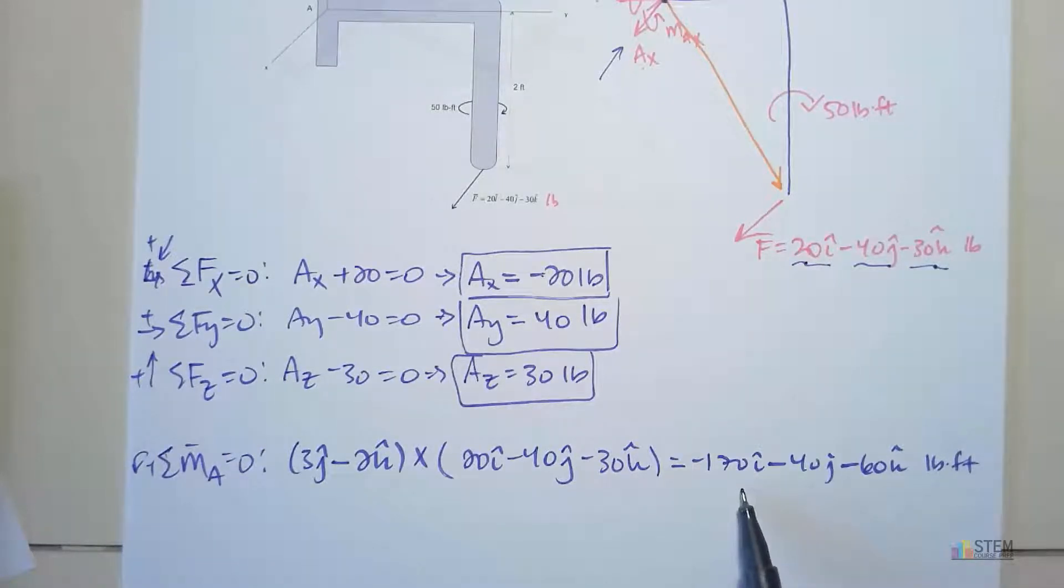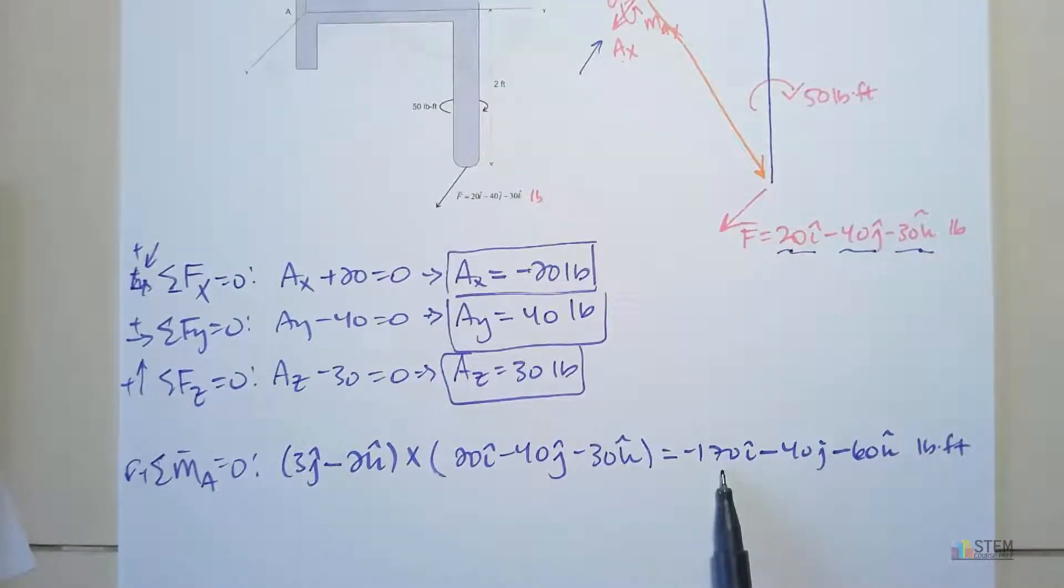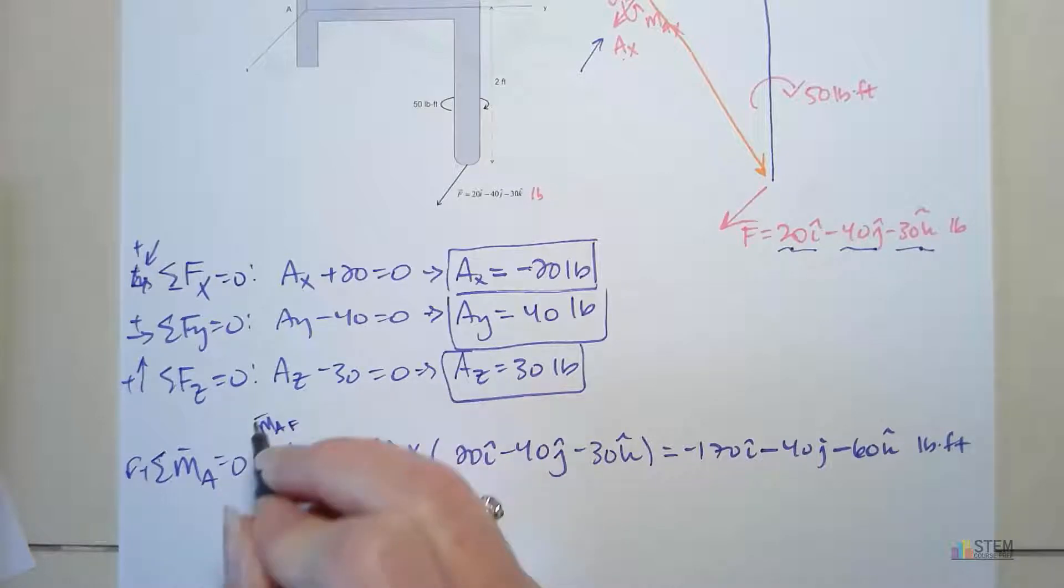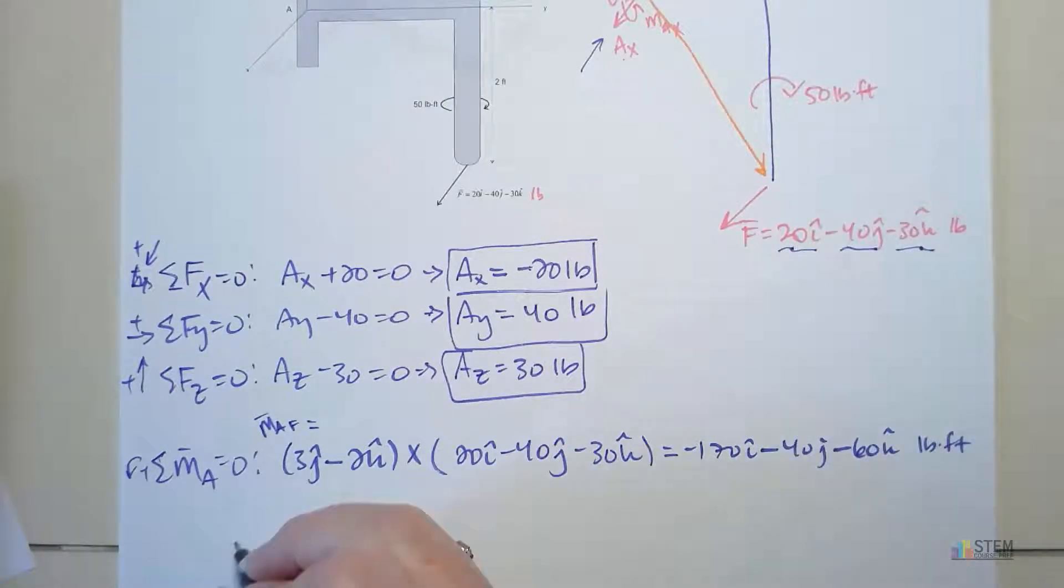Now think about what this is telling you. This is telling you that this force produces a clockwise moment of a magnitude of 170 about the x-axis. And we've got a clockwise moment with a magnitude of 40 about the y-axis, clockwise moment of magnitude 60 about the z-axis. All right, so we've got to counteract all of these things. Keep that in mind. So this is the moment about A due to our force. Now let's go to this couple moment. This has to be added in. We need it in vector form though.